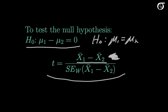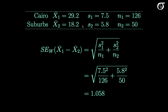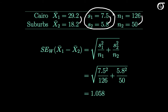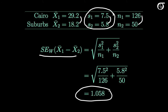Going back to the example, we have our difference in sample means between Cairo traffic officers and suburban officers, the standard deviations for both groups, and our sample sizes. The sample standard deviations are not too different, so using the pooled variance procedure wouldn't be crazy, but using the Welch procedure is also reasonable. Working through the standard error formula gives us a standard error of 1.058.